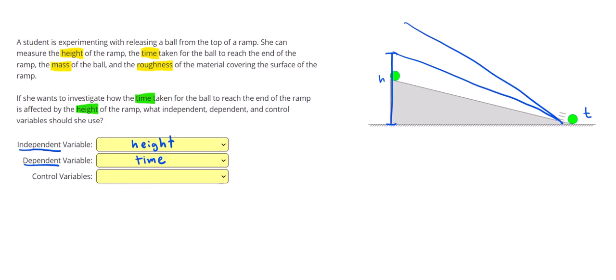The control variables are going to be the things that she keeps constant. If she wants to see how the height affects the time, she needs to keep everything else in her experiment the same. So that means she should keep the mass and the roughness the same as she tries different heights and measures the times to get the relationship.